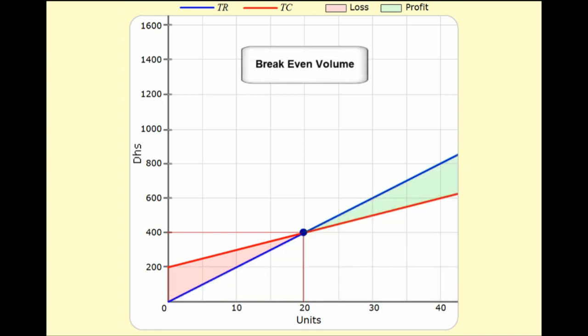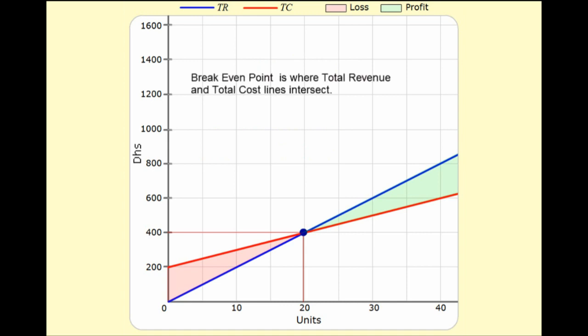The break-even volume is what I want to talk about now. The break-even volume is a specific number, and it refers to the number of units that you need to sell so that the total revenue equals total cost. Where the total revenue and total cost lines intersect is the break-even point, and the volume there is called the break-even volume, and this is a very important concept.